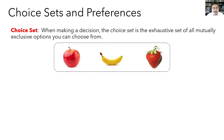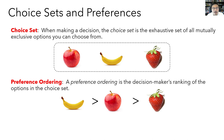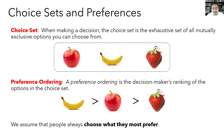Knowing the choice set by itself doesn't tell us what Henry is going to choose. In order to know what he'll choose, we also have to know what he prefers. In Henry's mind, he has what's called a preference ordering — simply the decision maker's ranking of the options in his choice set. Henry prefers the banana to the apple, and the apple to the strawberry. We assume that people always choose what they most prefer, and so Henry is going to choose the banana.